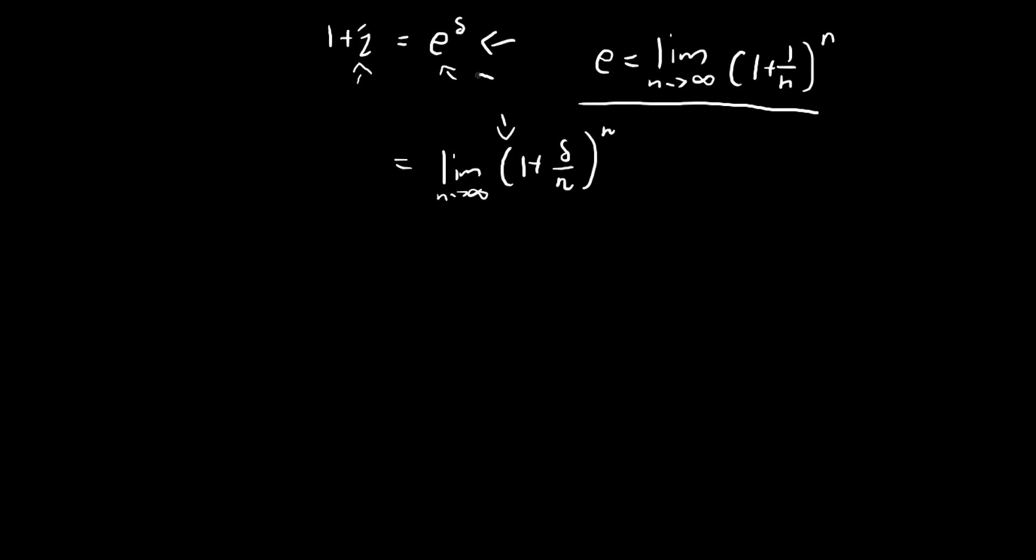And why is this term equal to this one? We can actually show it by rearranging a bit of the terms. So we can bring the delta down to the denominator, we can put a delta down here and then raise the whole thing by delta.